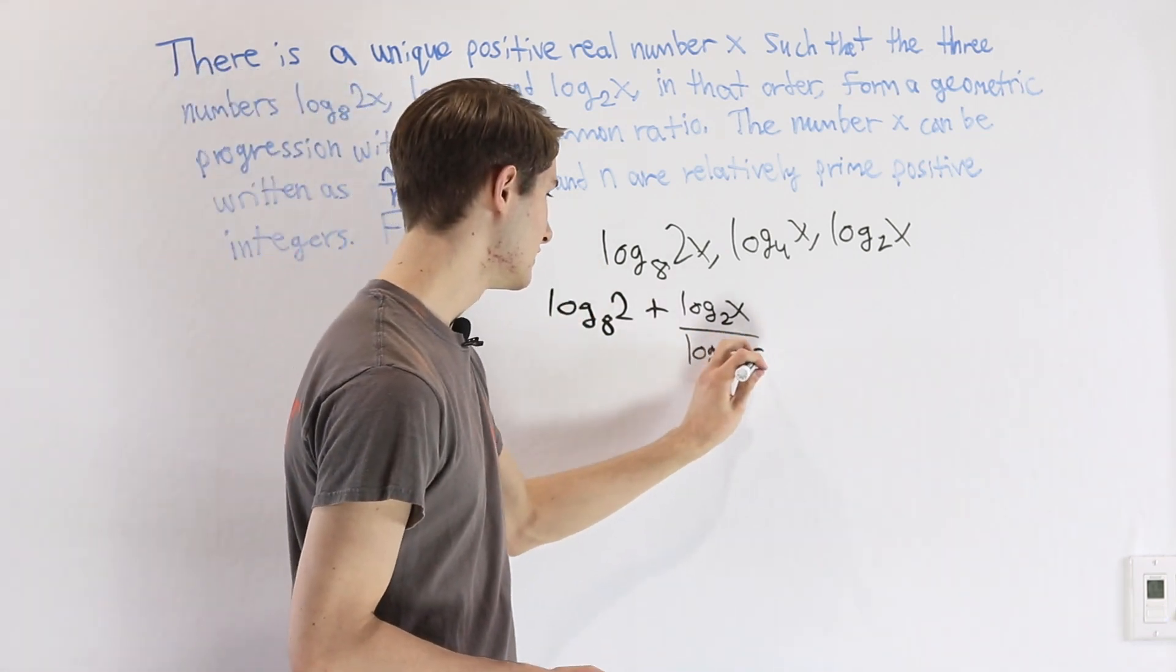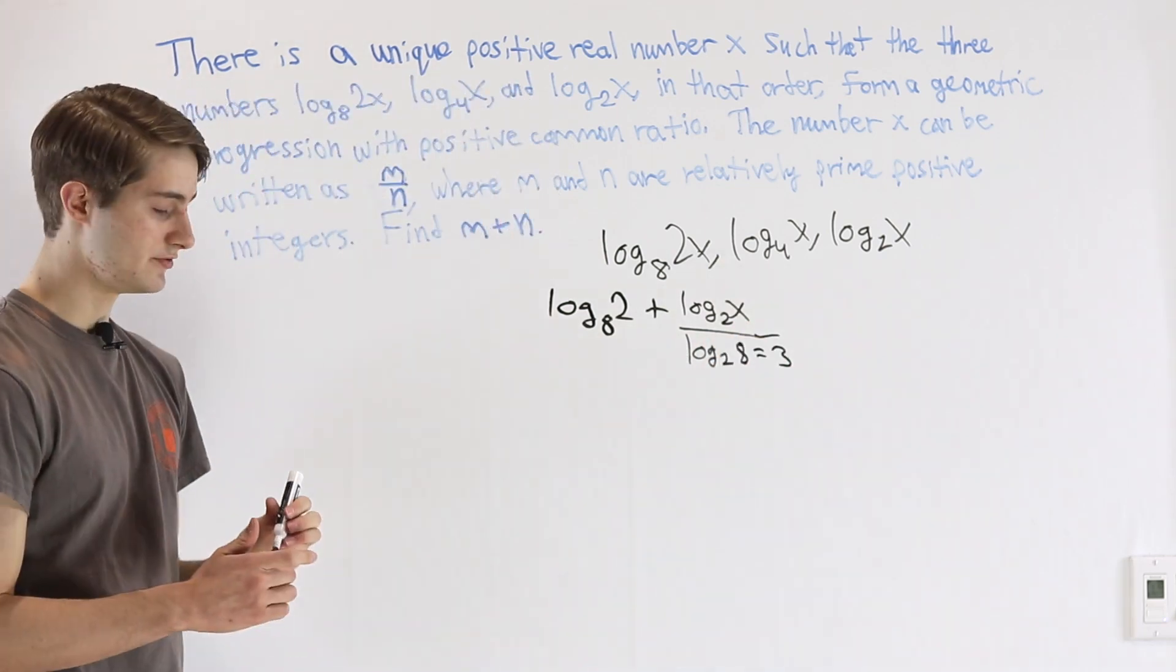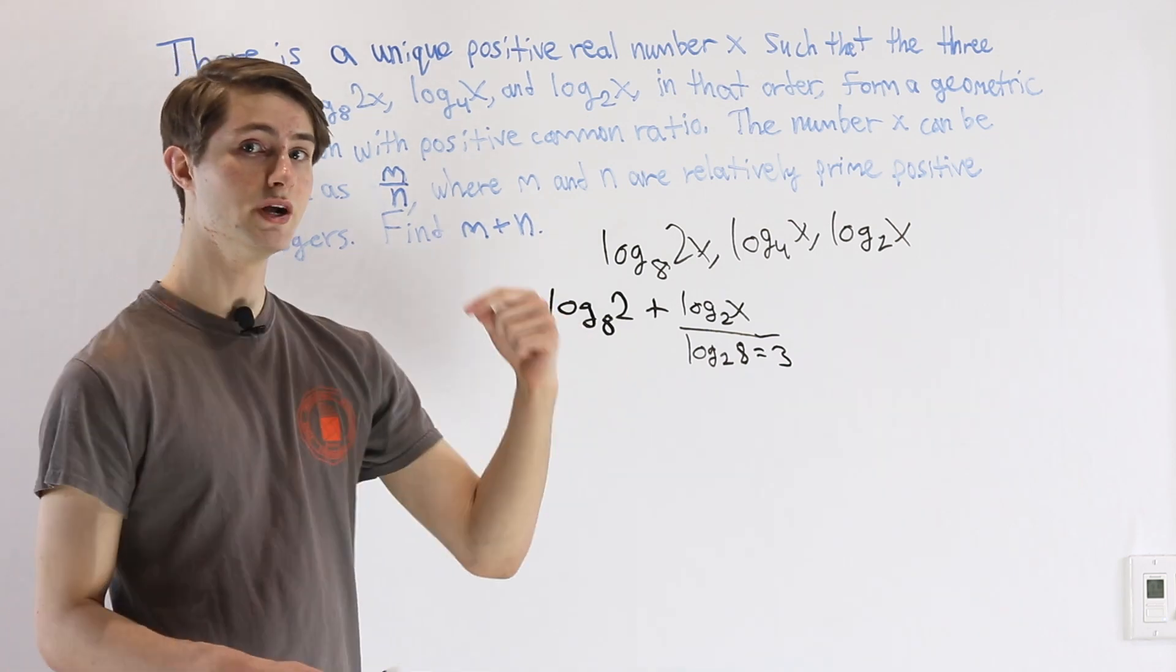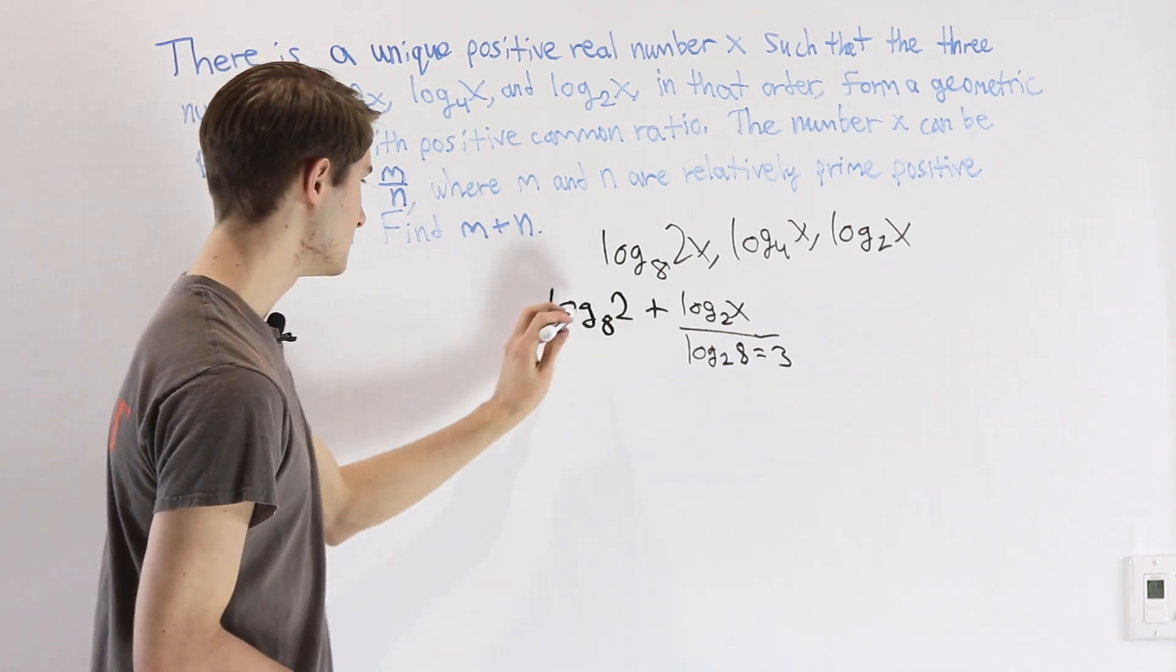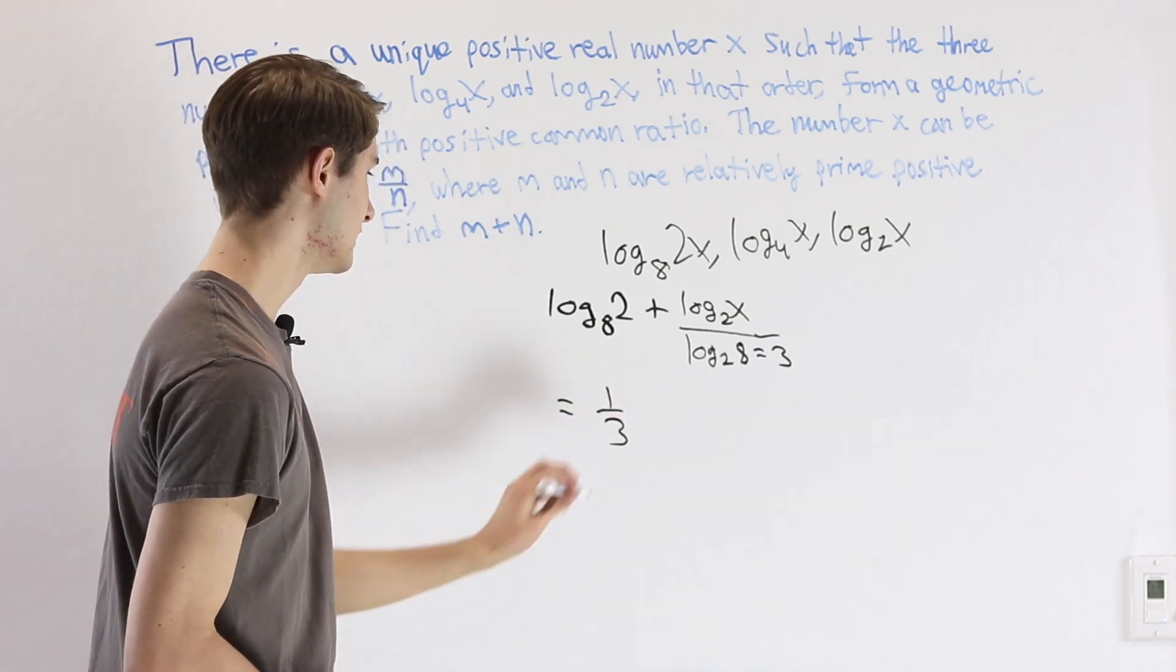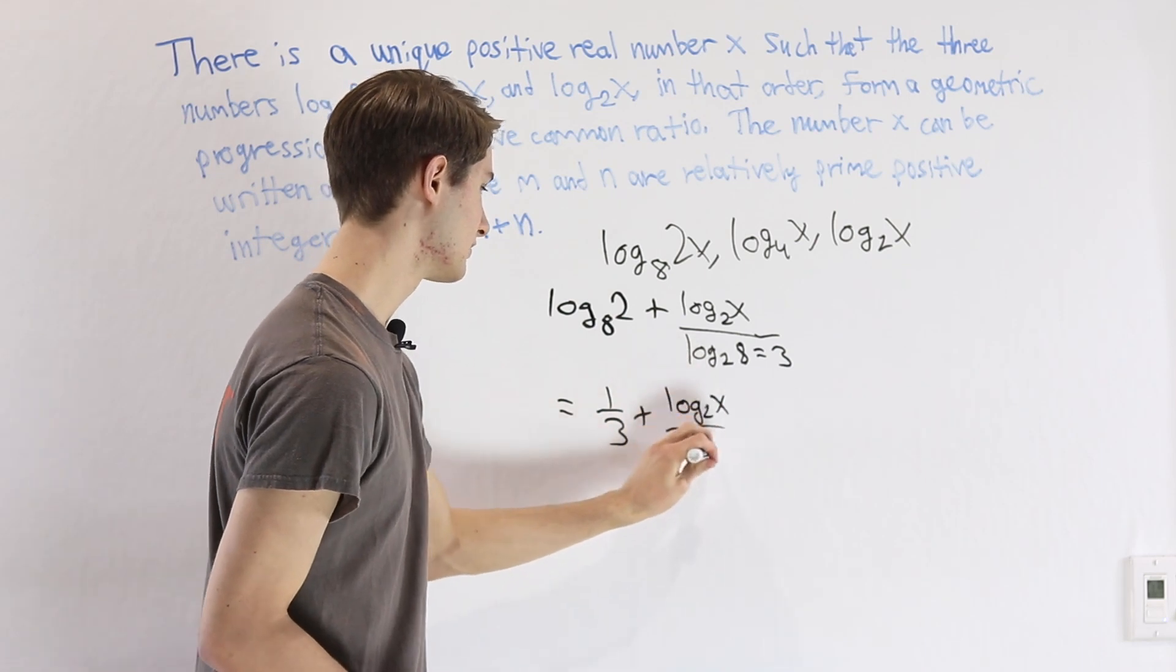So this on the bottom is equal to 3. Log base 8 of 2, well, because 2 cubed is 8, 8 to the one-third power is 2, which means this expression here is equal to one-third plus log base 2 of x over 3.